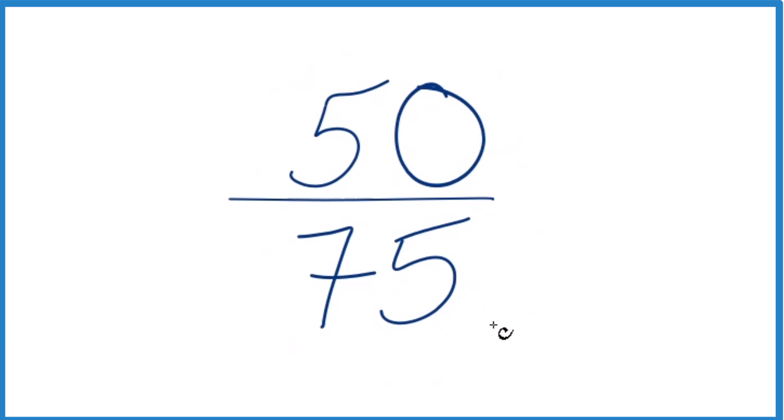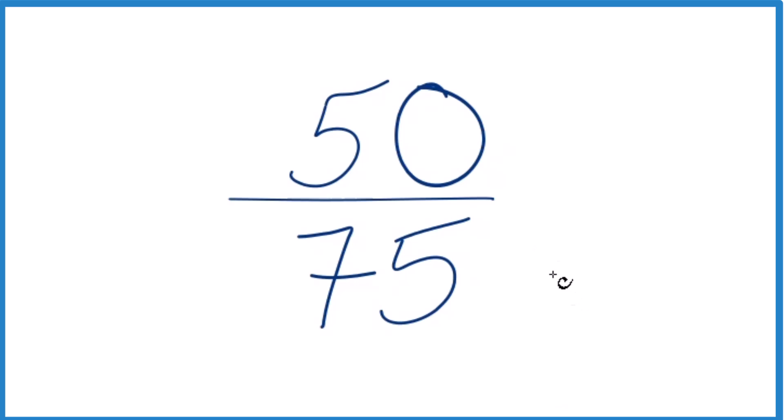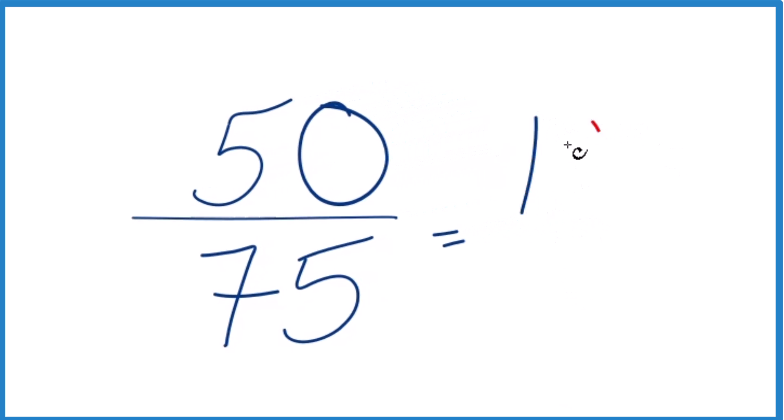So we need to find a common factor, a whole number, that goes into 50 and 75 evenly. We could just start with 5. 50 divided by 5, that's 10. 75 divided by 5, that's 15. So we end up with 10/15.